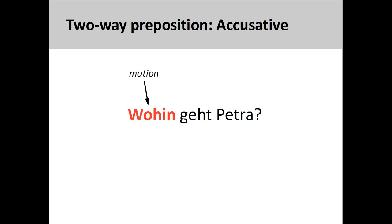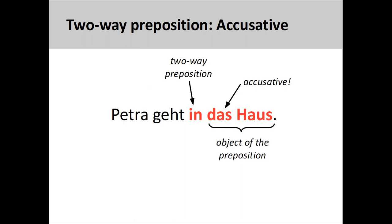However, if I were to ask the question, wohin geht Petra? Where is Petra going to? Which is a question about her motion. I would need to use in with an accusative object. Petra geht in das Haus. Petra is going into the house.